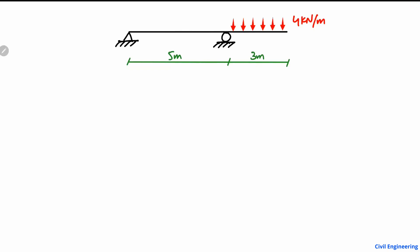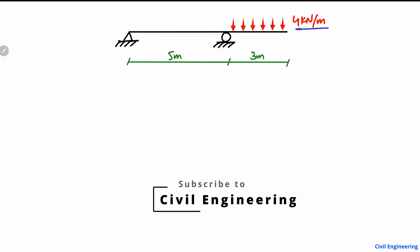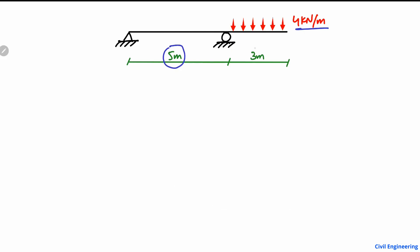Hello guys, welcome back to the Civil Engineering YouTube channel. Please subscribe for daily civil engineering videos. Today we are going to analyze an overhanging beam — how to find the support reactions for such an overhanging beam with a uniformly distributed load of 4 kN per meter. The unloaded length of the beam is 5 meters and the loaded portion has a length of 3 meters. We start by naming the supports A and B.